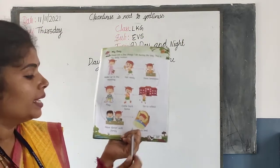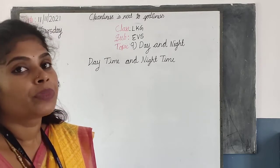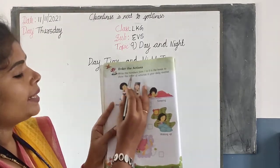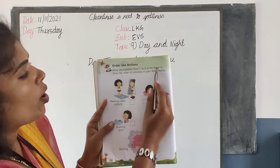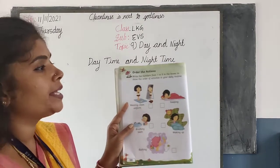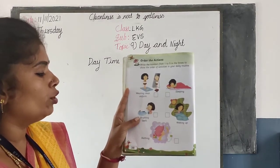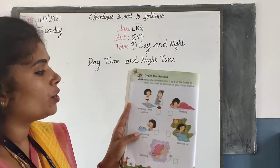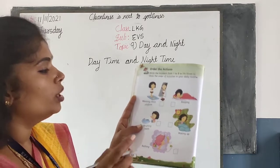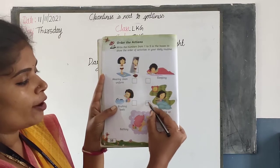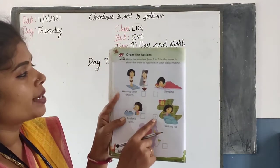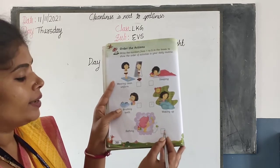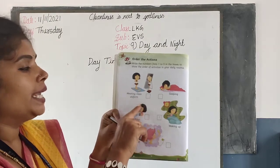These are our daily routine. Next — order the actions. Write the numbers from 1 to 5 in the boxes to show the order of activities in your daily routine. We have to give the numbers for each activity accordingly. First, what will we do? We will wake up in the morning, so write 1 inside the box. What we will do next — getting ready: we will brush our teeth, take bath, put on clean uniform.